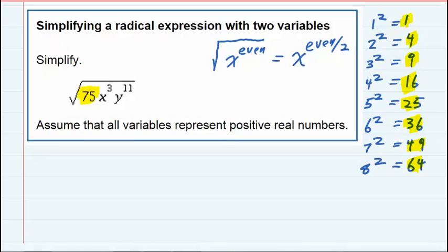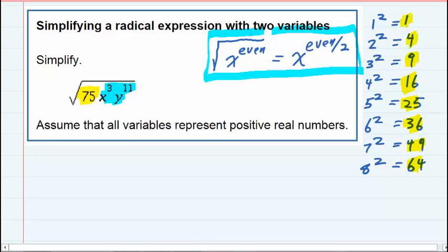But then the other part of that expression, the x³y¹¹, we're going to have to use this rule that says when we take the square root of a variable raised to an even power, we can get rid of the radical and divide the even power by two.